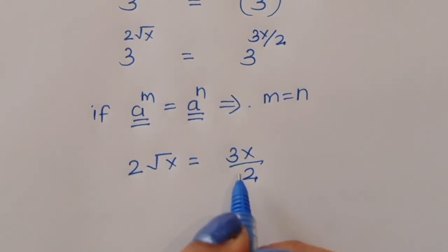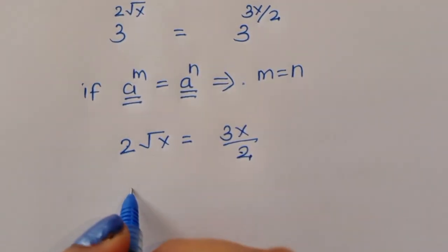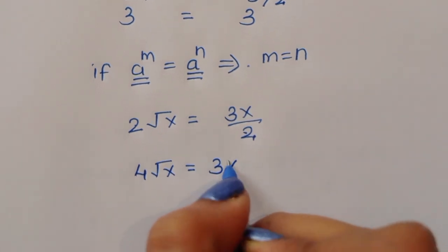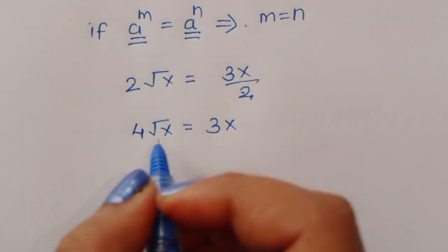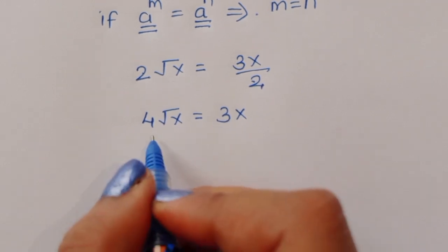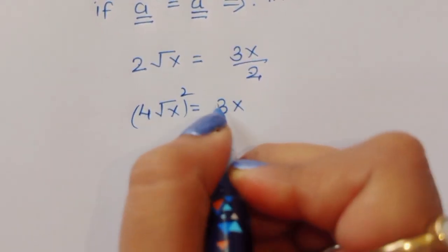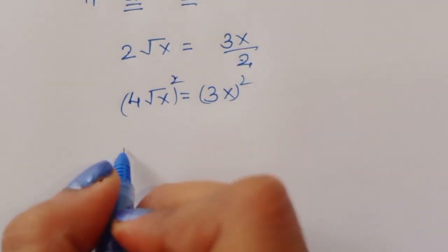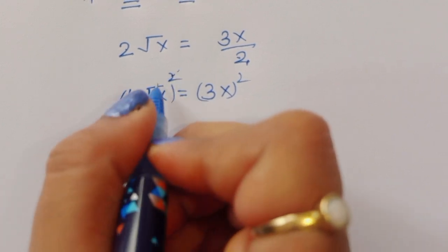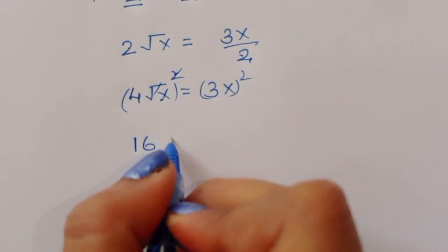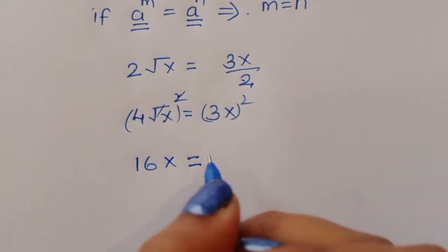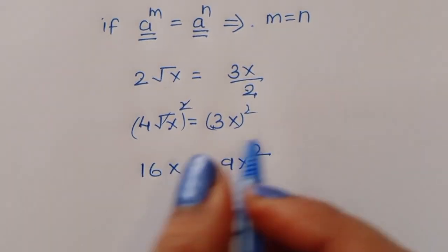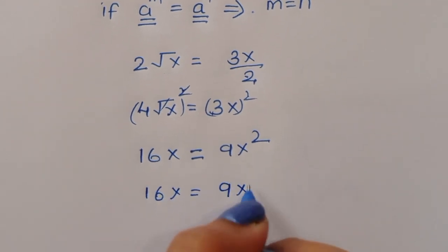Now we do cross multiplication, giving 4 root x equals 3x. Squaring both sides, the square root cancels on the left, giving 16x equals 9x squared.